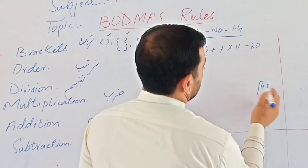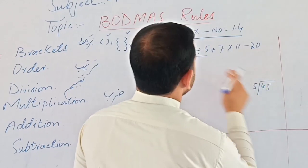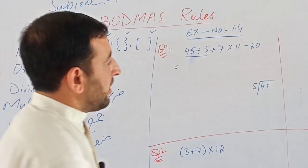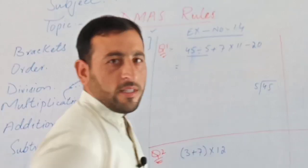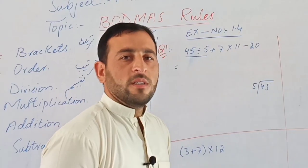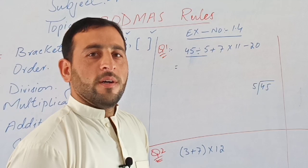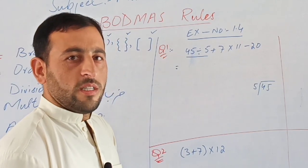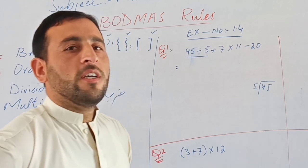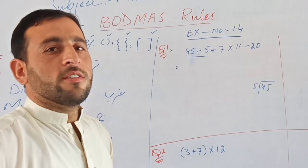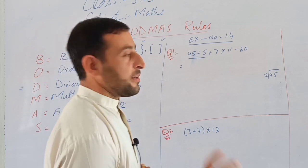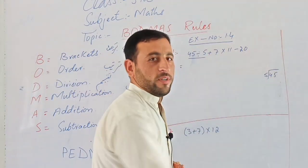According to BODMAS, we do division first. So 45 divided by 5 equals 9. The multiples of 5 are: 5, 10, 15, 20, 25, 30, 35, 40 — so 5 times 9 is 45.